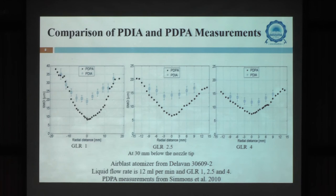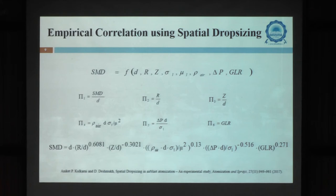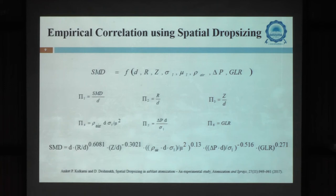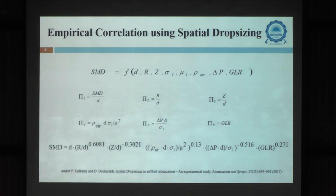Combining measurements from multiple data sources in the literature, including parameters such as pressure drop across the nozzle (ΔP), gas-to-liquid ratio (GLR), viscosity, and surface tension, we developed a spatial correlation for SMD distribution. This correlation gives the SMD variation both radially and axially throughout the spray, as a function of Ohnesorge number, pressure, surface tension, and GLR ratio. The key advantage is that for this particular nozzle, I can now get the calibration constant at any point inside the spray - whether in the center or at the edge - giving more reliable calibration for LSD measurements.